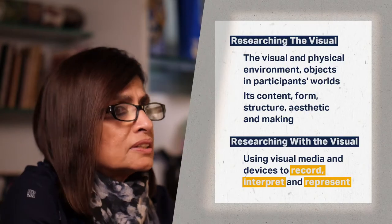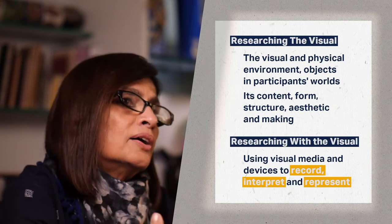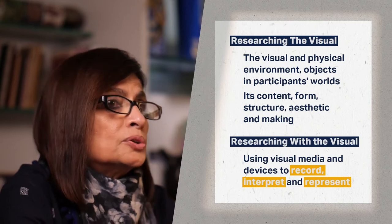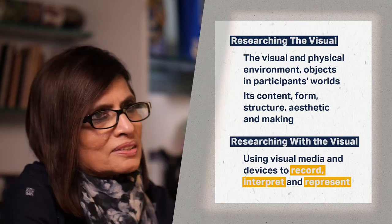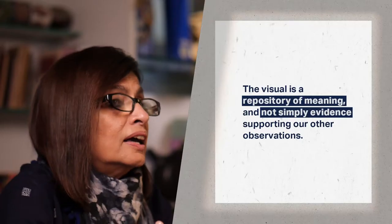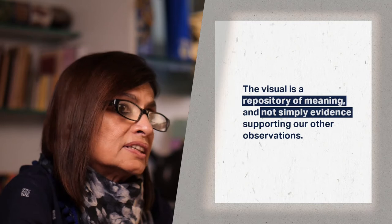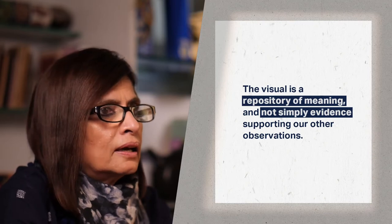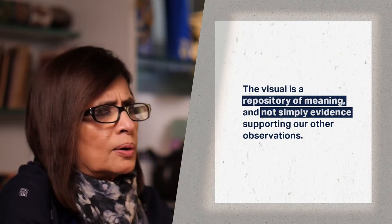Now we come to the second way of doing visual ethnography, which is to research with the visual. Here, we use visual devices such as drawings, photographs, or videos to record and represent the worlds of our participants. We can use visual media to interpret and represent what we learn — for example, we could make a film, a photo essay, or an illustrated book that represents our observations and analysis. In using visuals in our research, it is important that we see the visual as a research tool that contains meaning and not as mere evidence or proof of our observation.